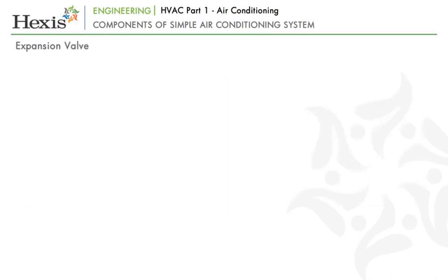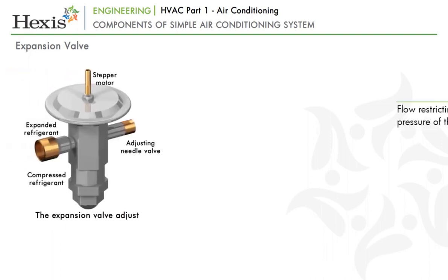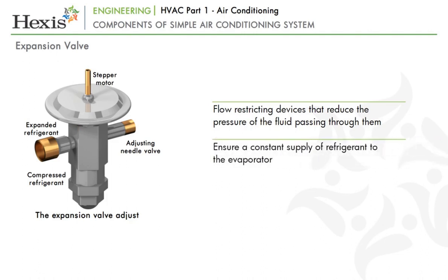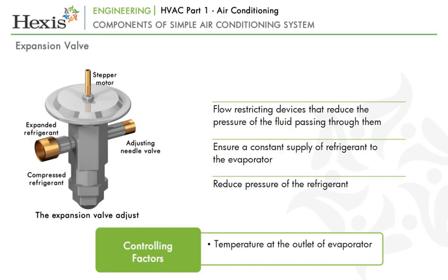Expansion valves are flow-restricting devices that reduce the pressure of the fluid passing through them. The condenser allows the refrigerant to cool, but the refrigerant comes out at the same pressure. The expansion valve ensures a constant supply of refrigerant to the evaporator depending on how quickly the refrigerant turns into gaseous state without superheating. The flow restriction reduces pressure to allow for expansion back into the gaseous state, using a combination of a movable pin and spring. Temperature at the outlet of the evaporator and pressure of the evaporator are the controlling factors — higher temperatures cause more fluid to flow into the evaporator.